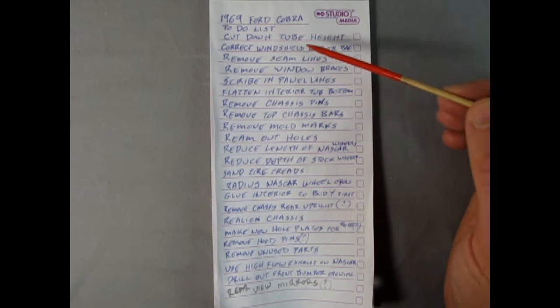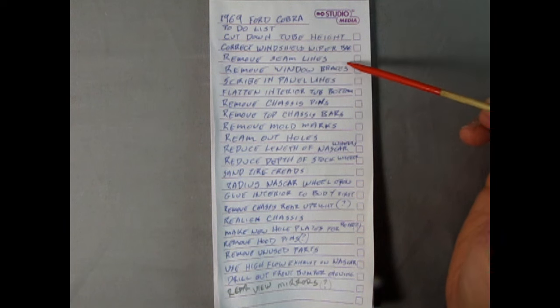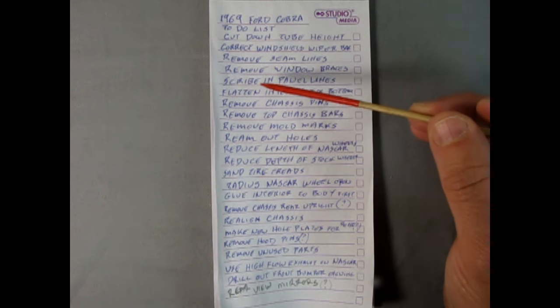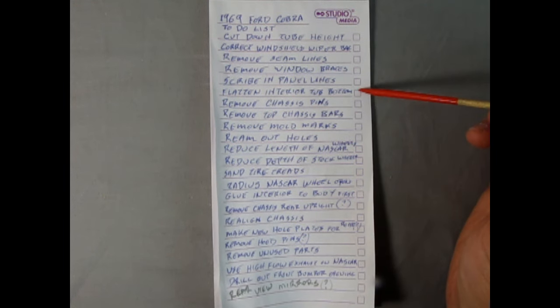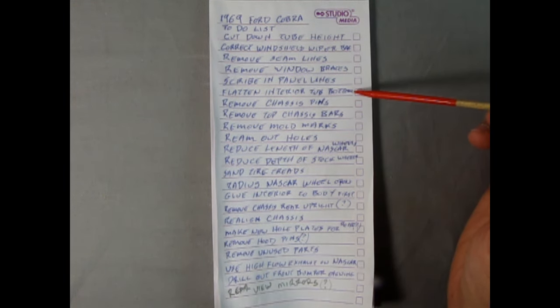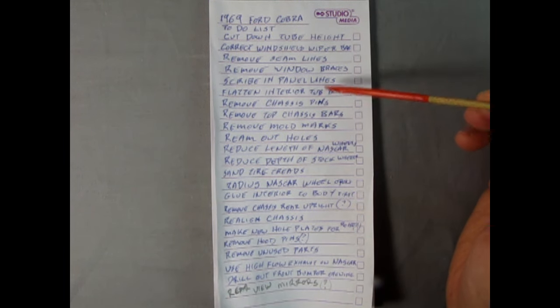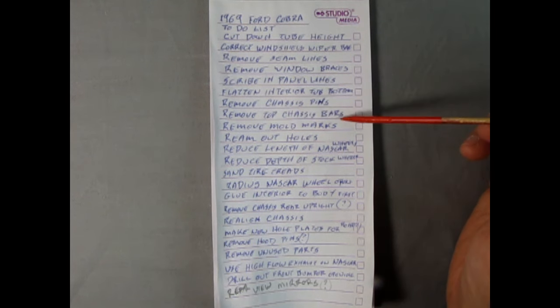The first thing I have is cut down the tube heights and then correct the windshield wiper bag. Remove the seam lines. Remove window braces. So these were in the sides, the little thing that said remove. Scribe in new panel lines. So that's down the doors on the cowl and at the back of the car. Flatten the interior tub bottom. So those were the welds on there. We're going to flatten those out. Remove the chassis pins. So that was the alignment to go with the tubes.